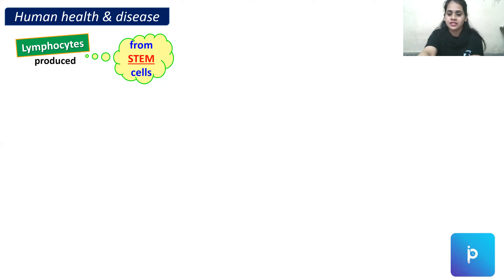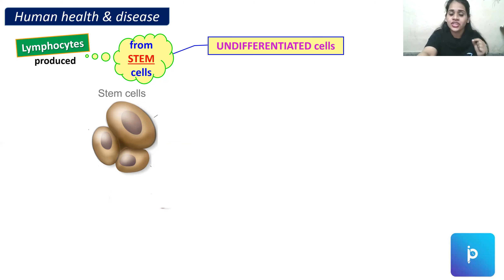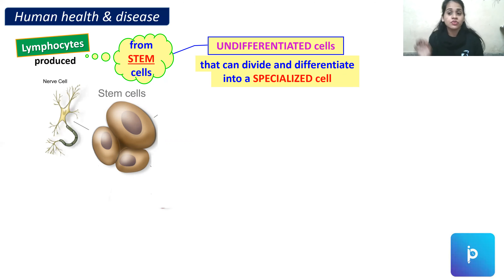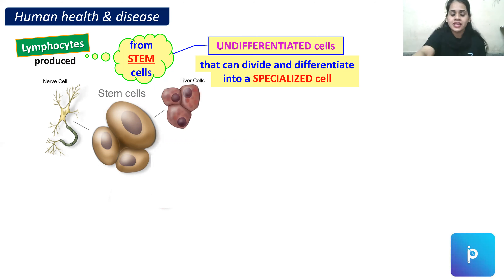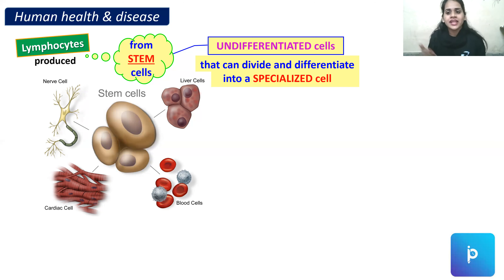Lymphocytes are produced from stem cells. Stem cells are undifferentiated cells which can divide and differentiate into any specialized type of cell — a nerve cell, liver cell, blood cell, or cardiac cell. That is why stem cell therapy is possible; stem cells can even be stored from the umbilical cord of a baby for use later in life if needed.